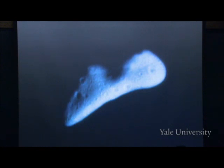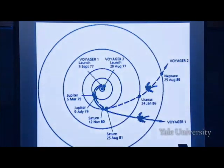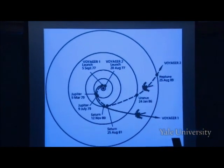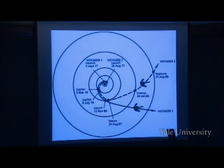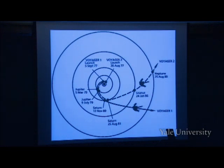Out beyond the asteroid belt are a number of other planets, and much of what we know about them comes from the Voyager satellites launched in the 1970s that have been traveling through the outer Solar System ever since. It turned out that in the 70s and 80s, Jupiter, Saturn, Uranus, and Neptune were aligned so that one satellite could catch them all as it went past, using each planet's gravitational attraction to swing itself to the next. These satellites gave us pictures of one planet after another, and we now know quite a lot more than we used to.